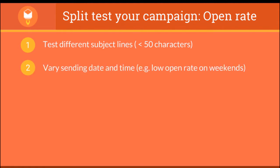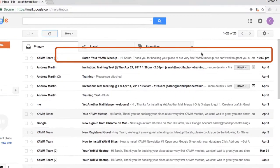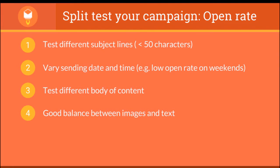You also want to vary the sending date and time. You'll probably get a lower open rate on weekends for your mailing list, so you can use YAM to schedule your campaigns. Test a different body of content and be careful with the first words you use in your email template. Also consider changing the format — is text only good for your audience, or do you need to balance it with a bit of text and images?